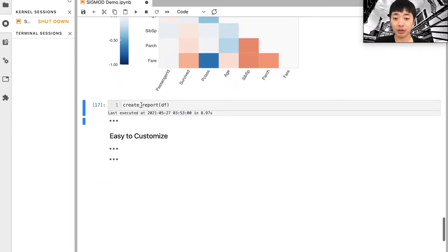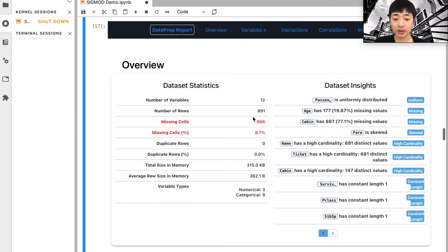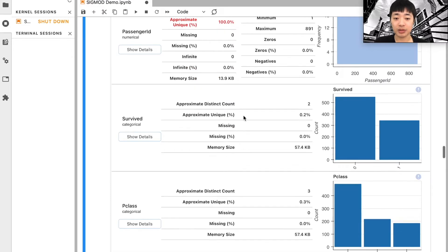You can also do plot_correlation to do correlation analysis. Finally, we also provide a create_report function, so that once you call it, it will generate a report containing all the information you see above.